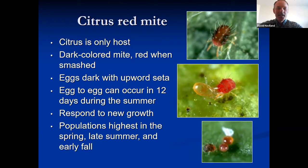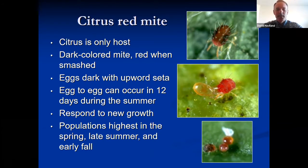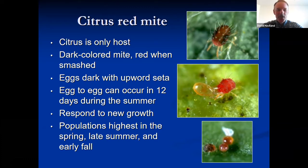Citrus red mite. This is the most common mite known in citrus, and citrus is its only host, compared to other mites like two-spotted mite that go to many different crops. This is your classic red and black, dark-colored mite that, when you smash it, leaves a little red stain on your finger or on the leaf. Very easy to identify.